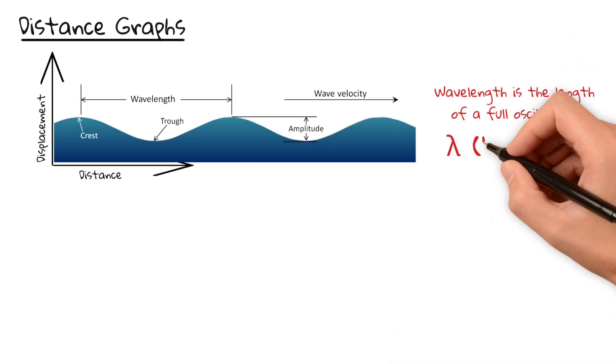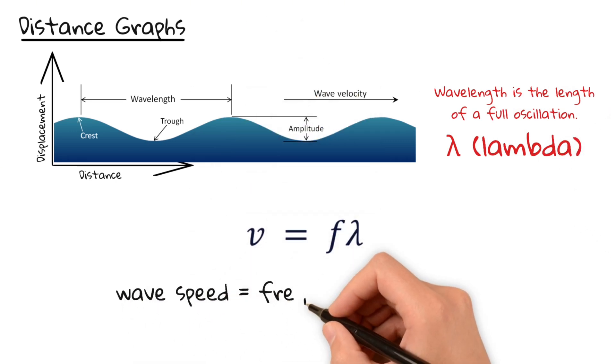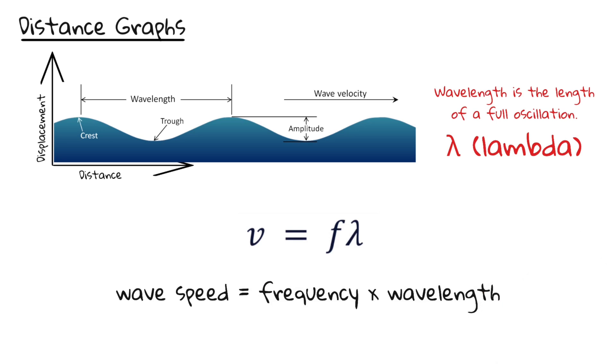Wavelength has the symbol lambda and is measured in meters. We can now use the wave speed formula. Speed is frequency times wavelength, where speed is in meters per second, frequency is in hertz and wavelength is in meters.